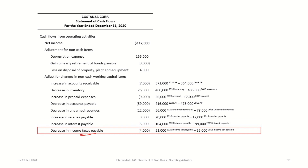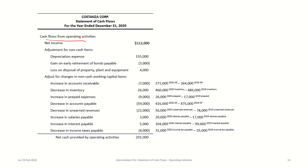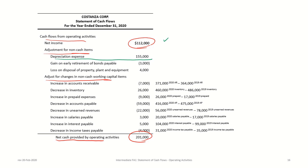Finally, income taxes payable decreased from $35,000 to $31,000, representing a cash outflow as cash was used to pay taxes. The completed operating section, starting with net income of $112,000 and adjusting for non-cash expenses and working capital changes, shows the company generated $201,000 in net cash from operating activities. This shows that despite a large non-cash depreciation expense of $155,000 included in income, the company generates strong positive operating cash flow.